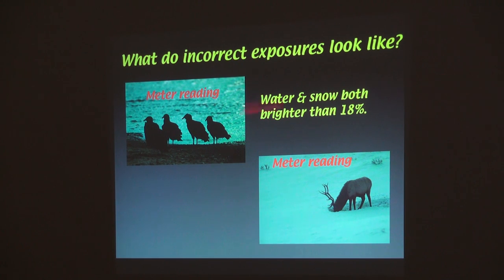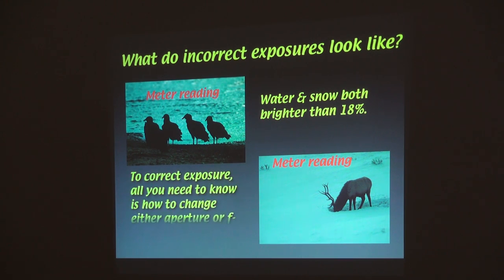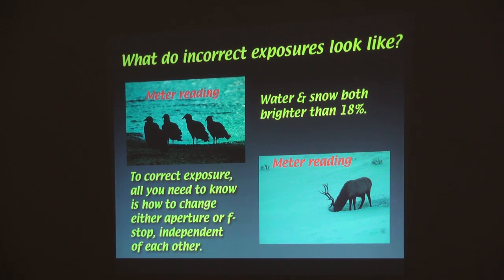Water and snow are both often brighter than 18%. So to get the correct exposure, you have to give the camera some light. The only way to give it is to physically change either aperture or shutter speed independently to let more light in. Otherwise it'll never happen. That's what the little plus or minus exposure button is for.